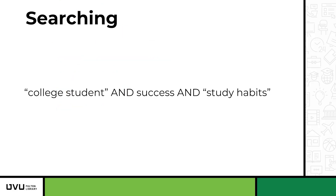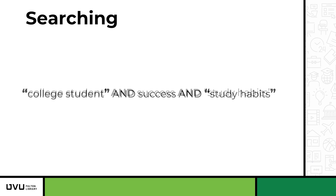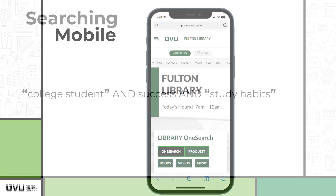Let's search for "college student" AND success AND "study habits". Using AND ensures the results have all three sets of search terms, and the quotation marks around "college student" and "study habits" mean the results will include sources with the full phrase instead of results with the individual words college, student, study, and habits.